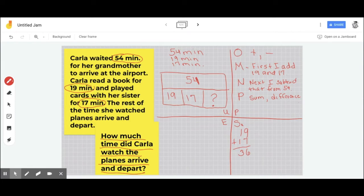Now I'm ready for my second step, which is subtracting it from 54, which is my big number. 54 subtract 36. See how those numbers are the same?